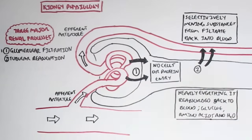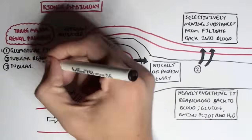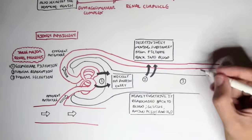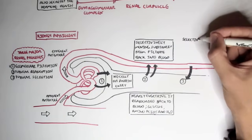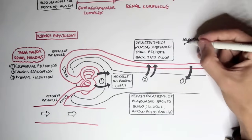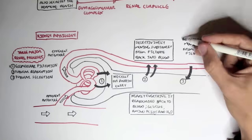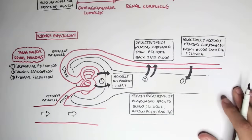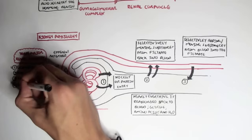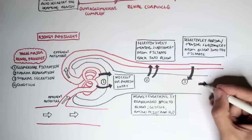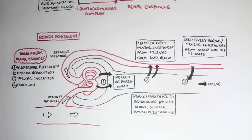Following reabsorption, we have number three: tubular secretion. This is when the body selectively moves substances from the blood into the nephron — into the filtrate — the opposite of reabsorption. The body dumps substances from the blood into the nephron that it doesn't need. So whatever is left in the nephron from filtration, reabsorption, and secretion, we have what we can call the fourth process: excretion, which is the urine leaving out.